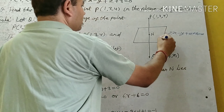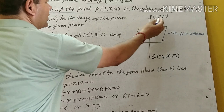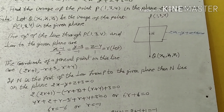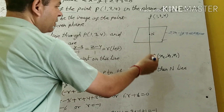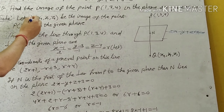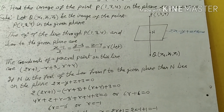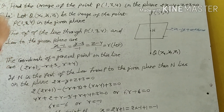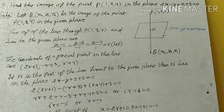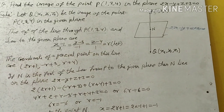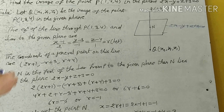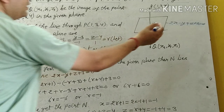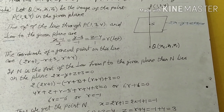The equation of the plane is 2x minus y plus z plus 3 equal to 0, and the coordinates of point P are (1, 3, 4). Let Q be the image of point P with coordinates (x1, y1, z1). Now, the equation of the line passing through point P(1,3,4) and perpendicular to the given plane is needed.